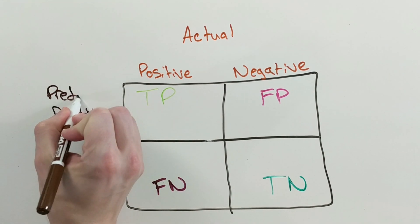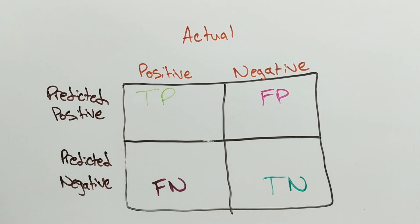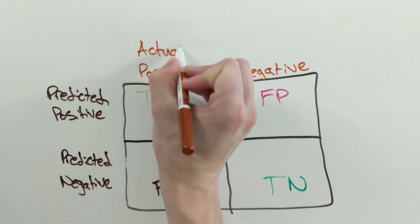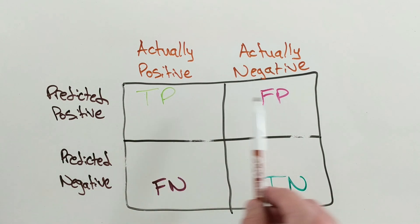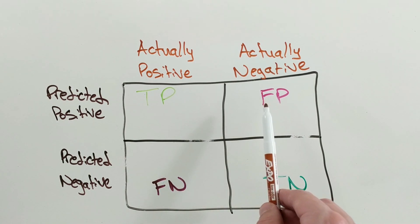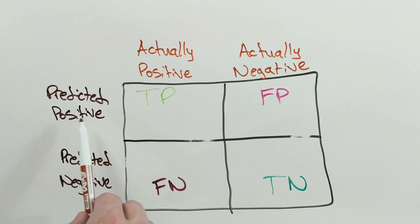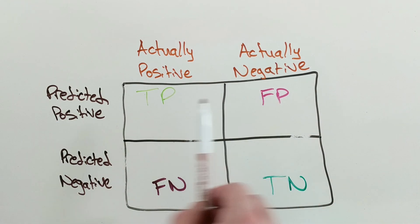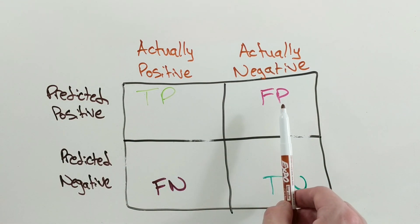The top row is predicting positive, and the bottom row is predicting negative. Similarly, the first column is what is actually positive, and the second column is what is actually negative. So to understand what the top right box means, we look at it in the predicted positive row with the actually negative column — it's the number of examples where your model guessed positive when in reality it was negative.